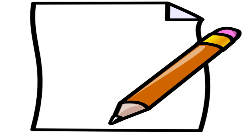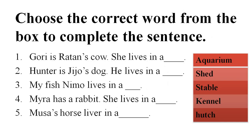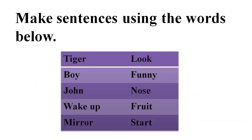Now it's practice time. Question number one: choose the correct word from the box to complete the sentence. Here are the sentences and the options. In the second exercise, you have to make sentences using the words given in the box. Now it's time to leave. We shall meet again in the next video. Till then, keep on learning. Bye.